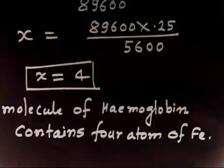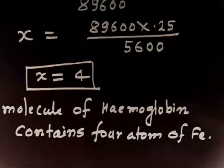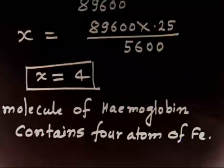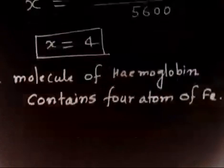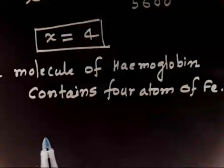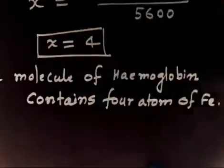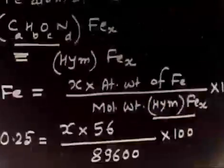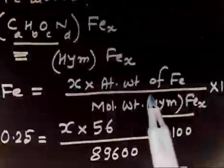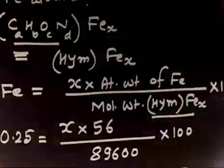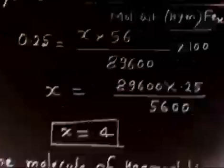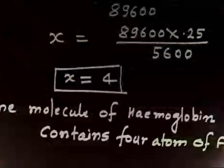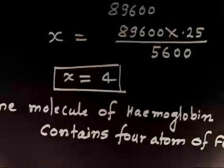One molecule of hemoglobin contains 4 atoms of iron. This is quite an interesting problem — it is only related to percentage composition. To find the percentage of any element in a compound, you can always use this formula: X times the atomic weight of that element, divided by the molecular weight, times 100. Using this formula, you can find the percentage and from there determine how many atoms of a particular element are present — that is the value of X.